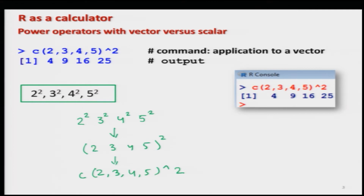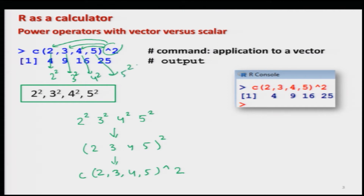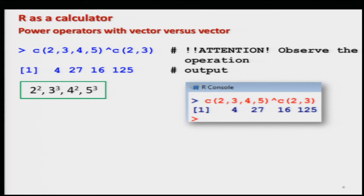The moral of the story is this: once you write a data vector with a power operator, the power operator will be executed on each element. So 2 becomes 2 squared, 3 becomes 3 squared, 4 becomes 4 squared, and 5 becomes 5 squared. You get the outcome: 2 squared is 4, 3 squared is 9, 4 squared is 16, and 5 squared is 25. The power operator is distributed across all elements of the data vector.